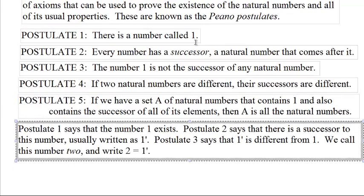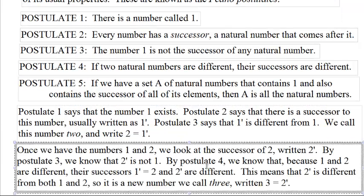Postulate 1 says that the number 1 exists. Postulate 2 says that there's a successor to this number, usually written with a little prime mark to indicate the number that comes after — usually written as 1 prime. Postulate 3 says that 1 prime is different from 1, because 1 is not the successor of something, so the successor of 1 can't be 1. Therefore the successor of 1 is different from 1. We call this number 2 — the number that comes after 1.